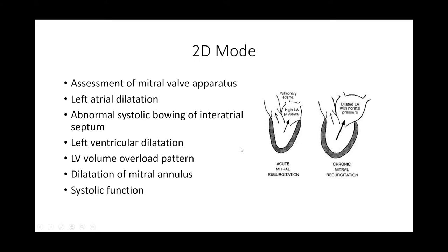The effect of MR depends on whether it's acute or chronic. In chronic MR, there would be a dilated left atrium — left atrial pressure may be normal or high depending on staging — and the left ventricle would be dilated with a volume overload pattern. In acute MR, the picture differs.